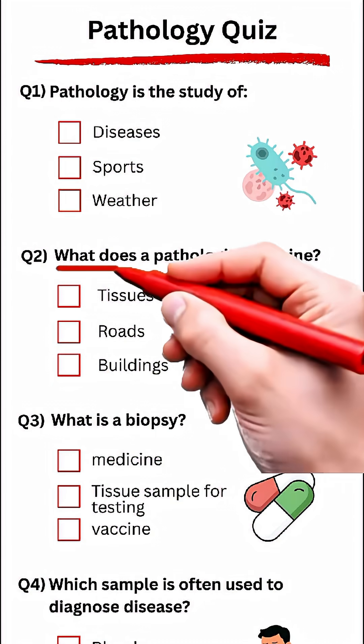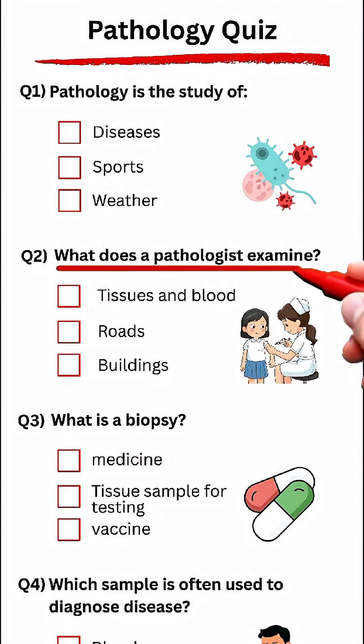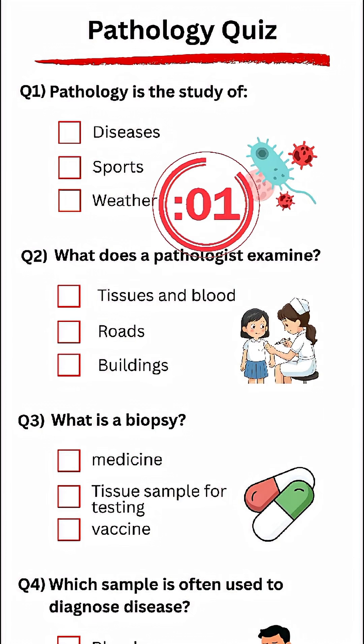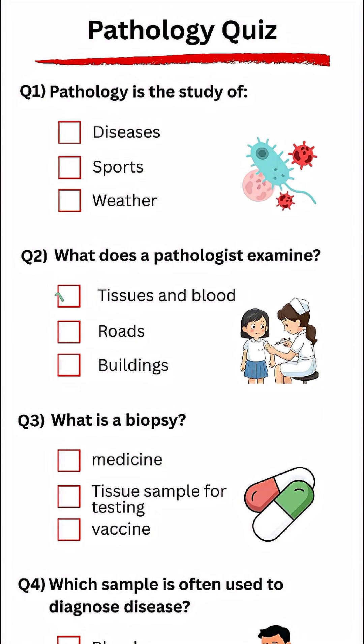Question two. What does a pathologist examine? Answer: Tissues and blood.